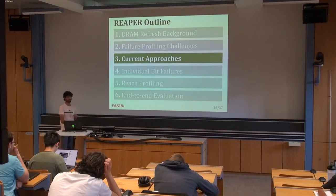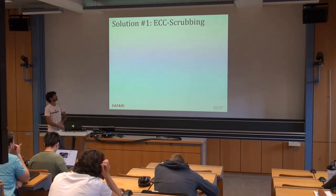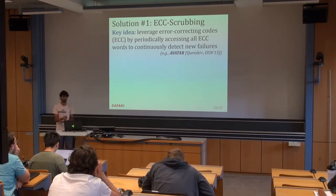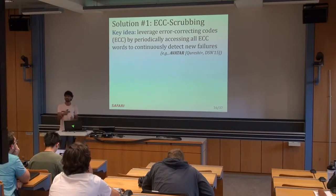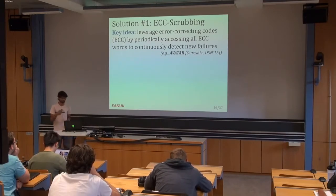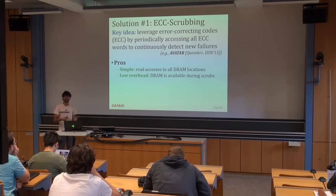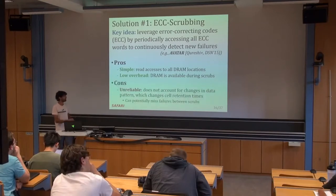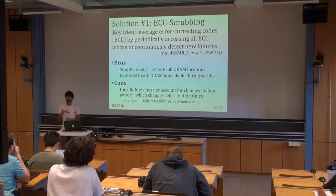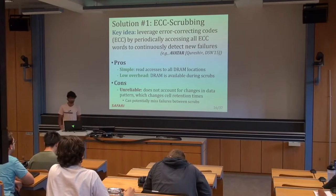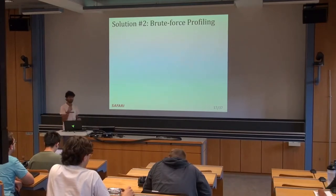Now I'm going to talk about current approaches for retention failure profiling. The first is called ECC scrubbing, where the key idea is to leverage error correction codes already built into the memory by periodically accessing every single ECC word in the memory device. Every time we come across a failure, we log the location. The pros are that it's very simple, consisting of just read accesses to DRAM locations, and DRAM is still available for regular operation during the ECC scrub. However, it's unreliable because it won't account for changes in retention time due to data pattern changes, potentially missing failures between scrub operations.